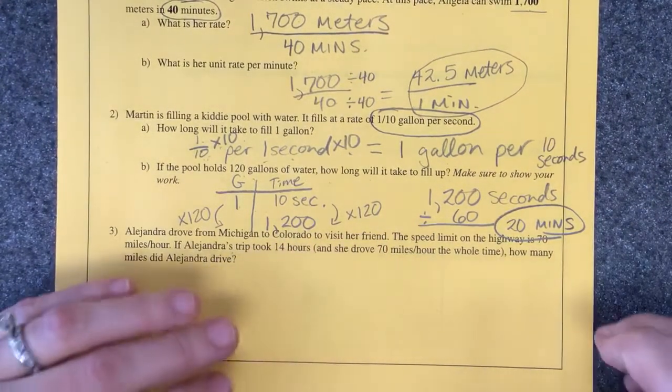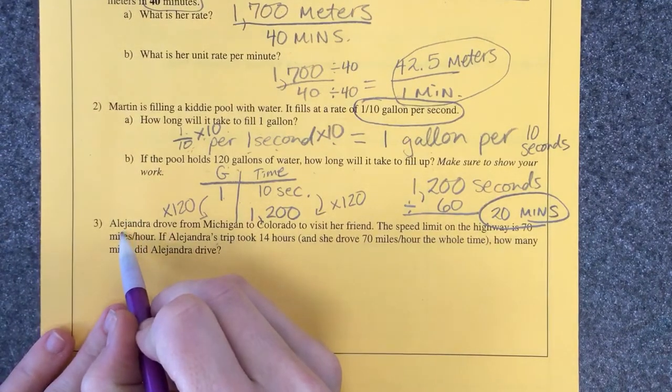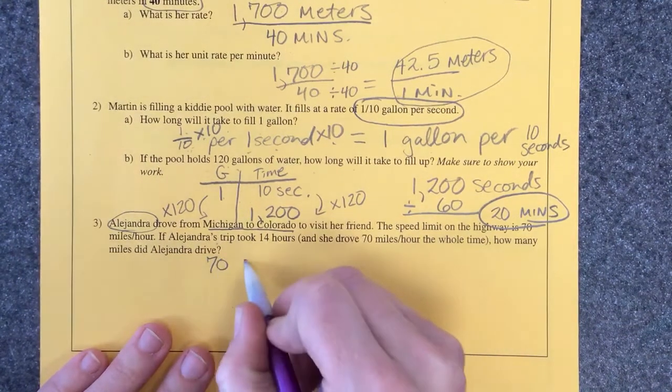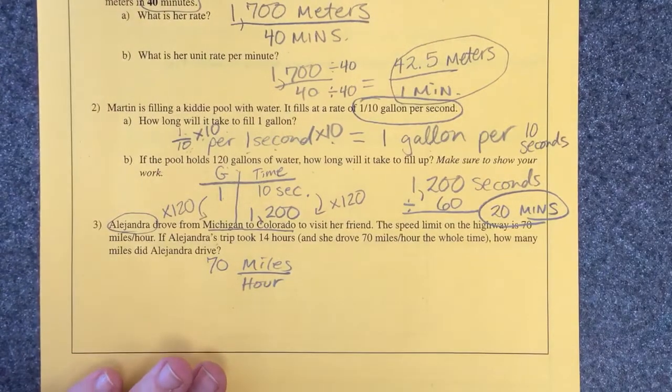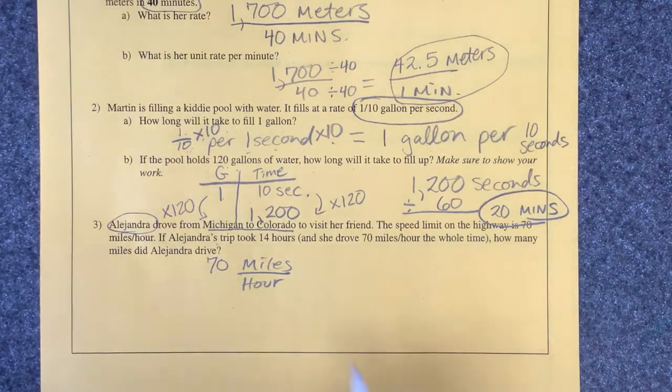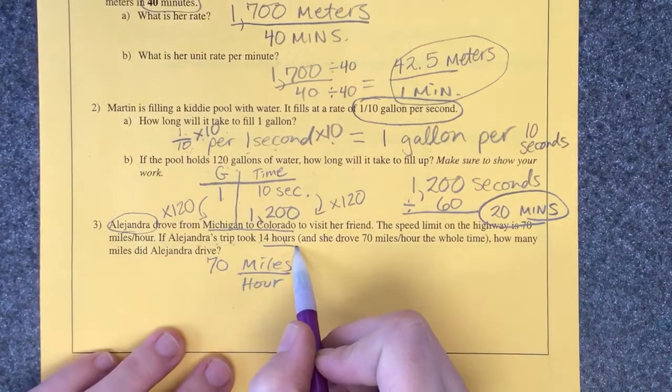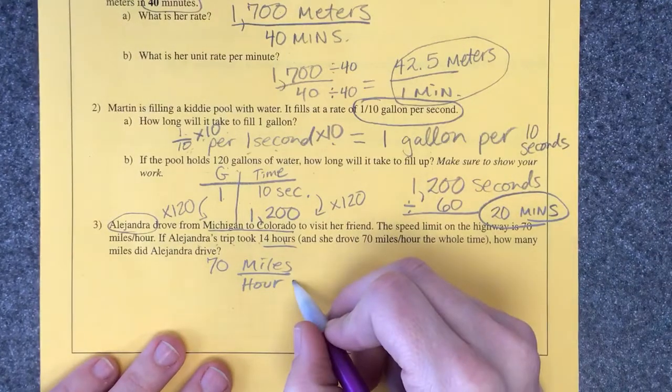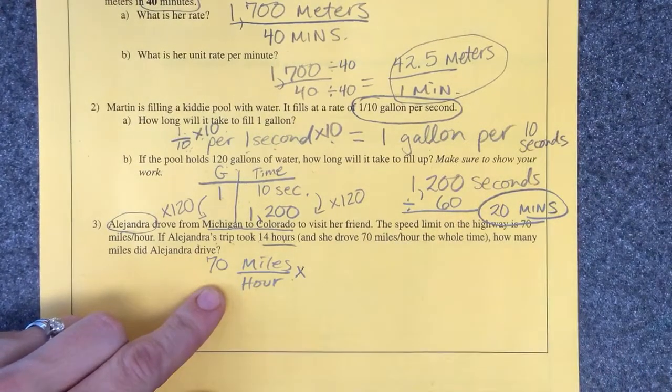All right, now this chicky-poo Alejandra wants to go from Michigan to Colorado, that's pretty far. The speed limit on the highway is 70 miles per hour. Does anybody actually drive the speed limit? No, kind of sometimes. If Alejandra's trip took 14 hours, that's one long trip especially to be in a car by yourself, how many miles did she drive? What should we do, add subtract multiply or divide? Multiply, times 14, wonderful.